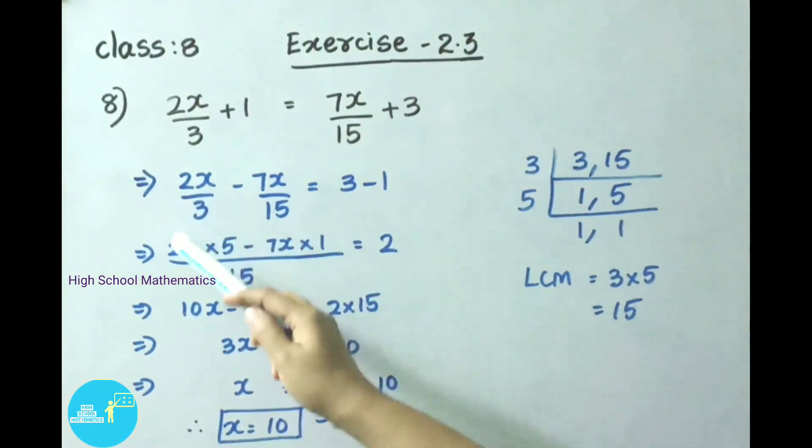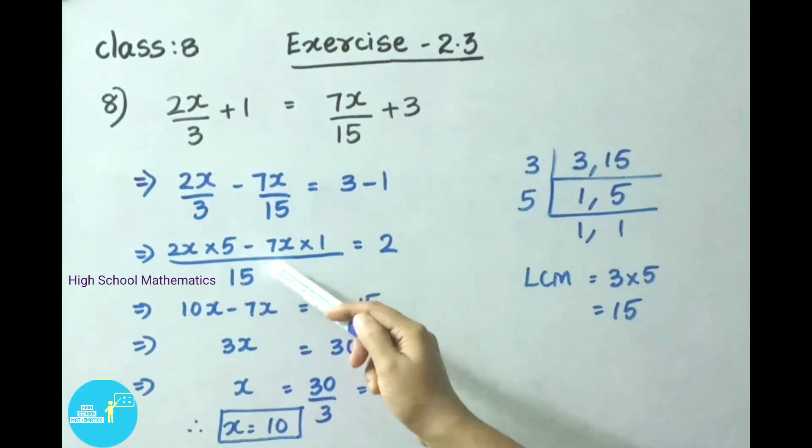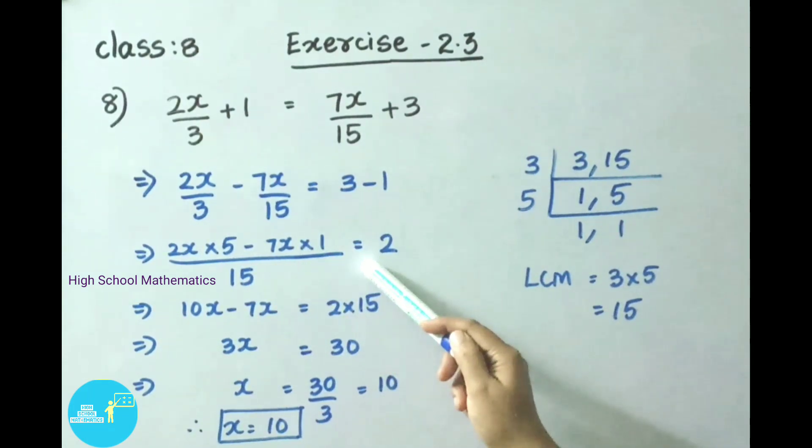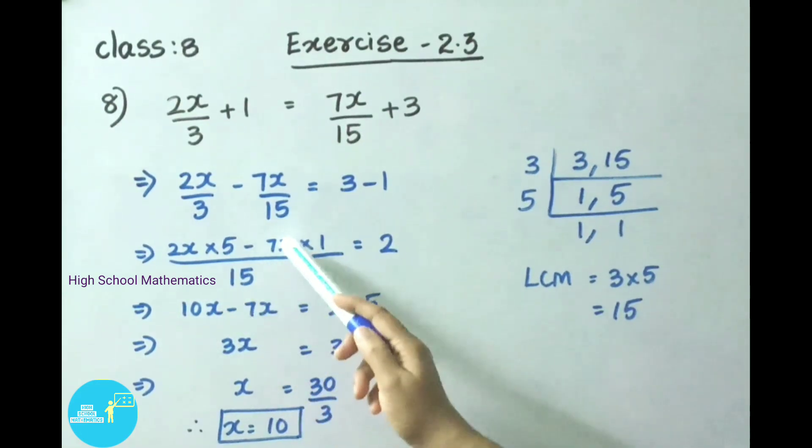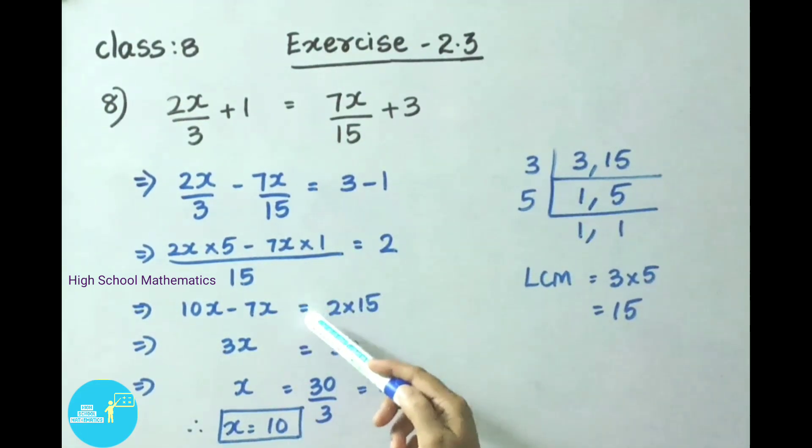Now take numerator part: 2x into, 3 table 15 is 5 times, minus, take numerator 7x into, 15 table 15 is 1 time, that equals 3 minus 1 means 2. That implies 2 into 5, 10. So 2x into 5 that is 10x minus 7x into 1, 7x, that equals 2 into 15. Here 15 is going to divide, on transposing it becomes multiplied.